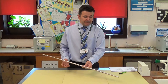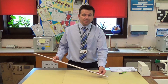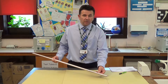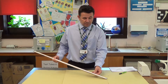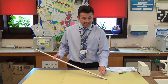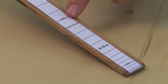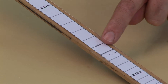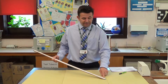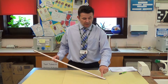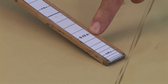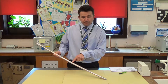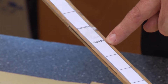Basically, somebody is going to catch that ruler, and we're going to time how long it takes for them to catch it. We've actually put the times on the ruler for the different distances. So a fast reaction time will be something like 0.1 seconds, and a slower reaction time will be 0.3 seconds.